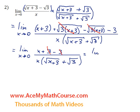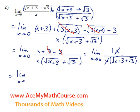Let me continue. We have the limit as x approaches 0 of x over x times the square root of x plus 3 plus the square root of 3. Now, the x's can cancel out, and we end up with a 1 up top in the numerator. So we have the limit as x approaches 0 of 1 over the root of x plus 3 plus the root of 3.